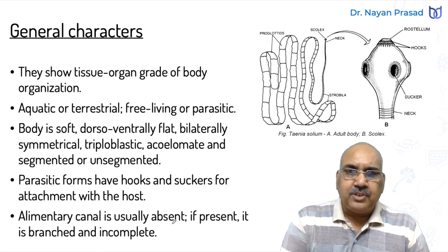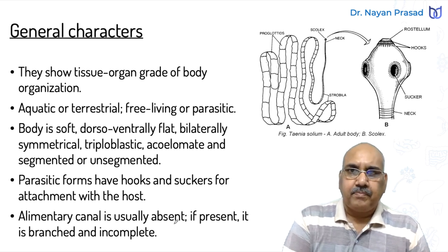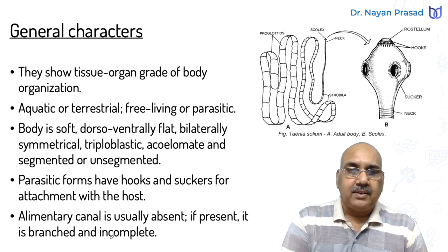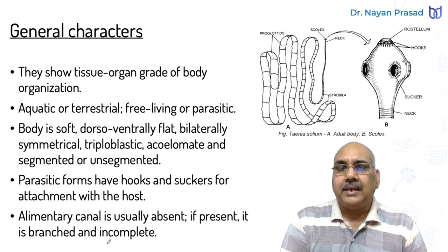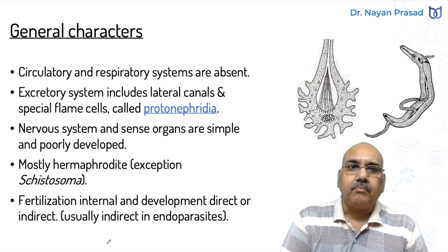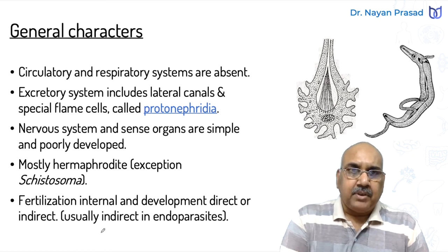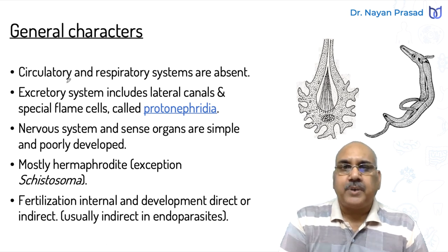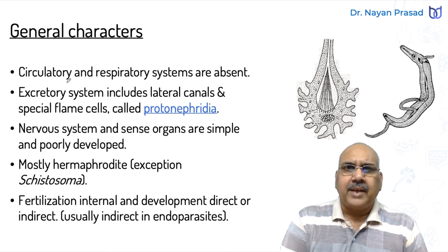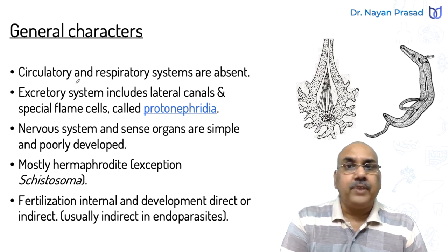The alimentary canal is usually absent — remember the alimentary canal is the digestive organs — usually absent, and if present it is branched and incomplete, meaning not fully developed. The circulatory system and respiratory systems are absent. Respiration — gaseous exchange — usually takes place through the general body surface in case of free-living individuals.